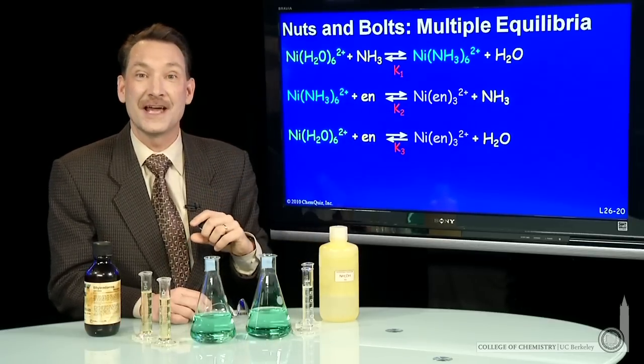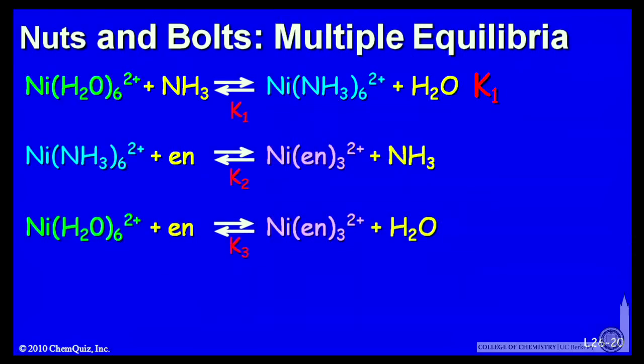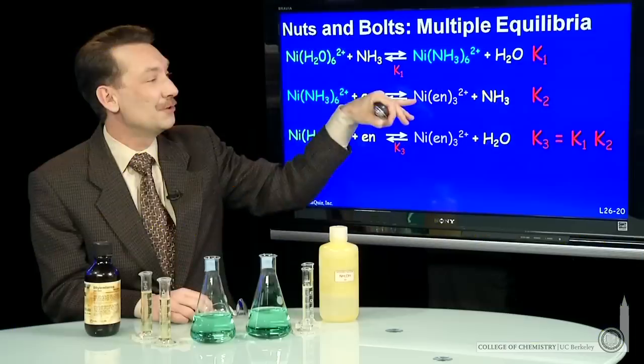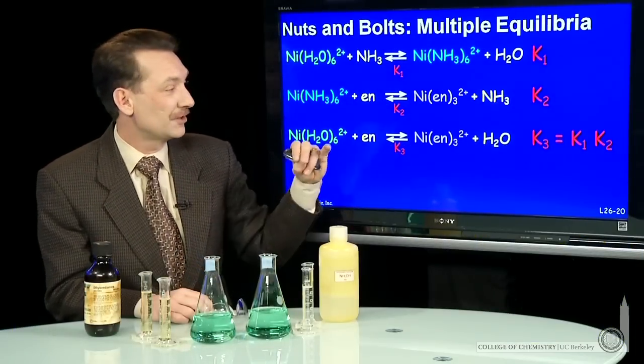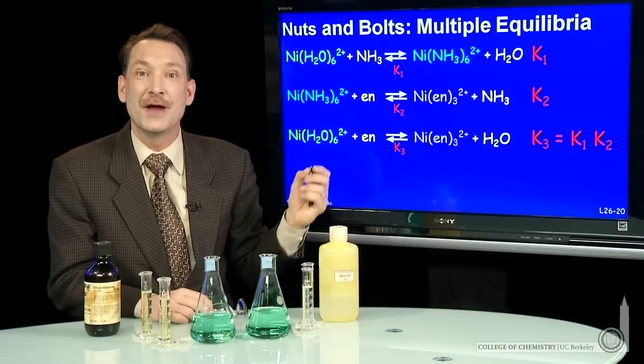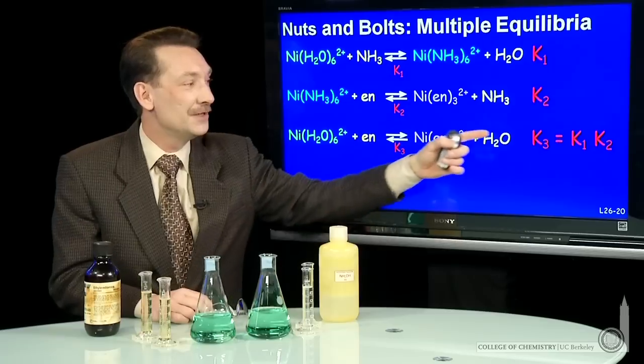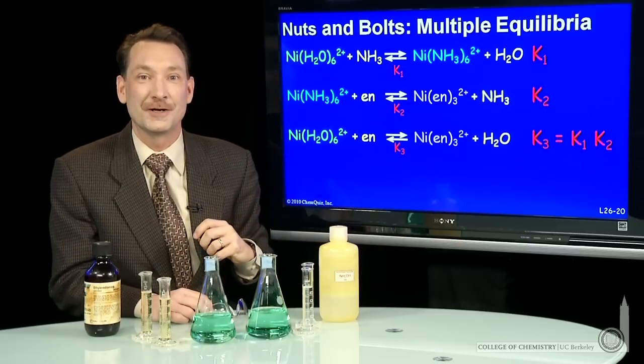I have K1 for this reaction, K2 for this reaction. For this reaction, K3 is actually the product of K1 and K2 because this reaction is the sum of these two. When you add reactions, you multiply equilibrium constants.